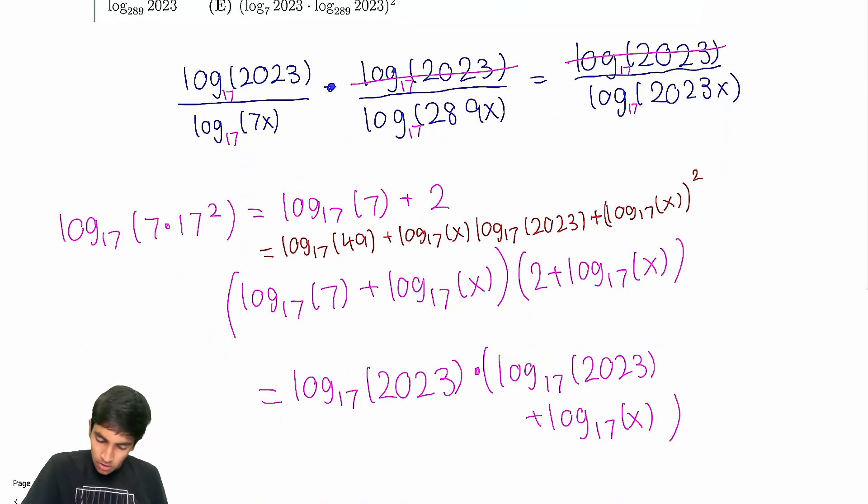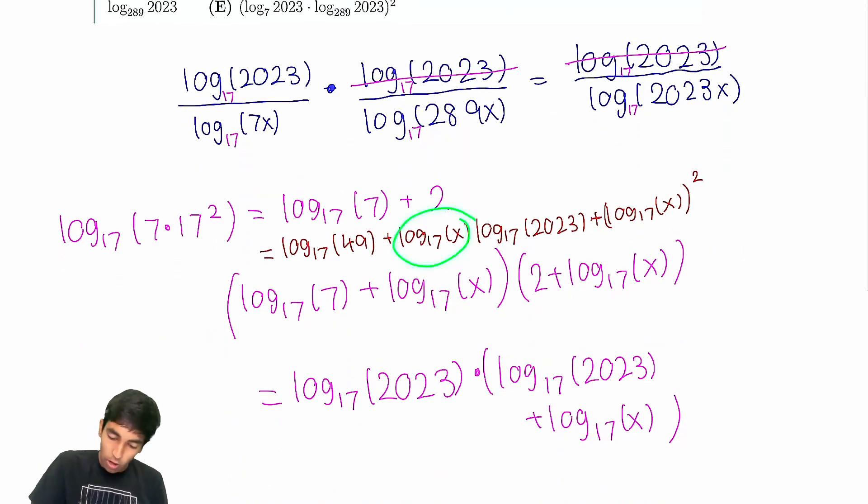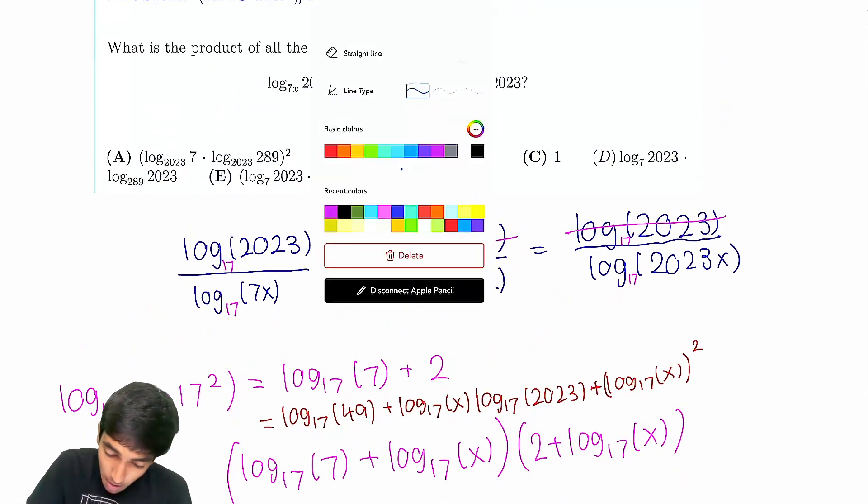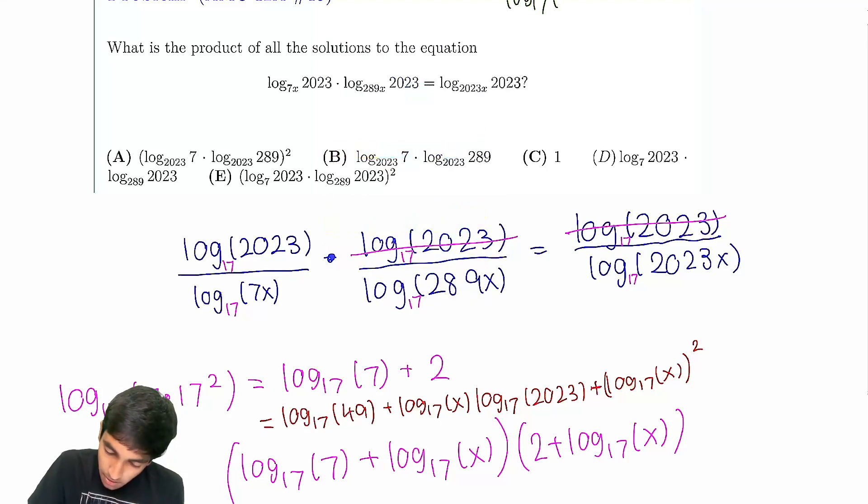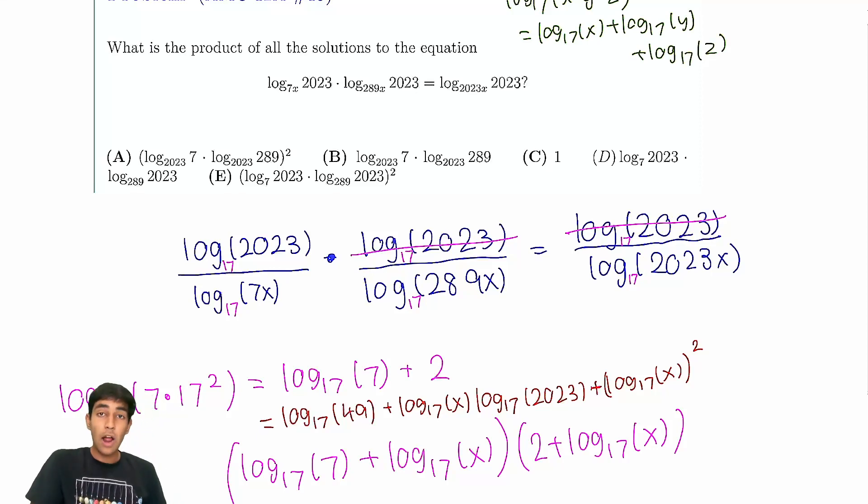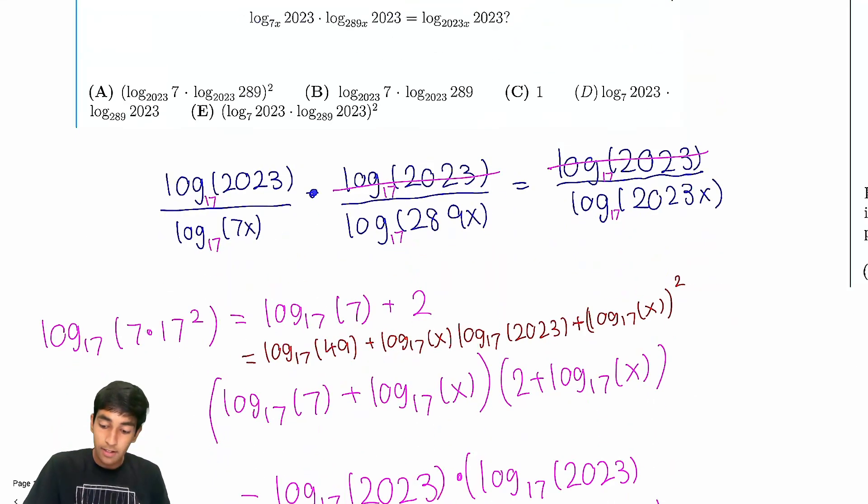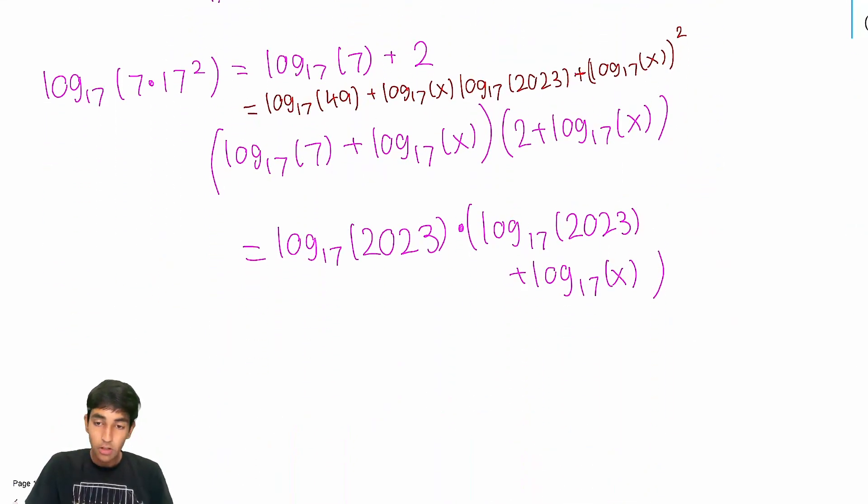But here, look, take a look. We don't really have any x itself. We always have log₁₇(x). So if we're trying to find the product of all the solutions, it's a very common trick. What if we just take log₁₇ of that product? Because we're dealing with log₁₇(x) in all our instances.